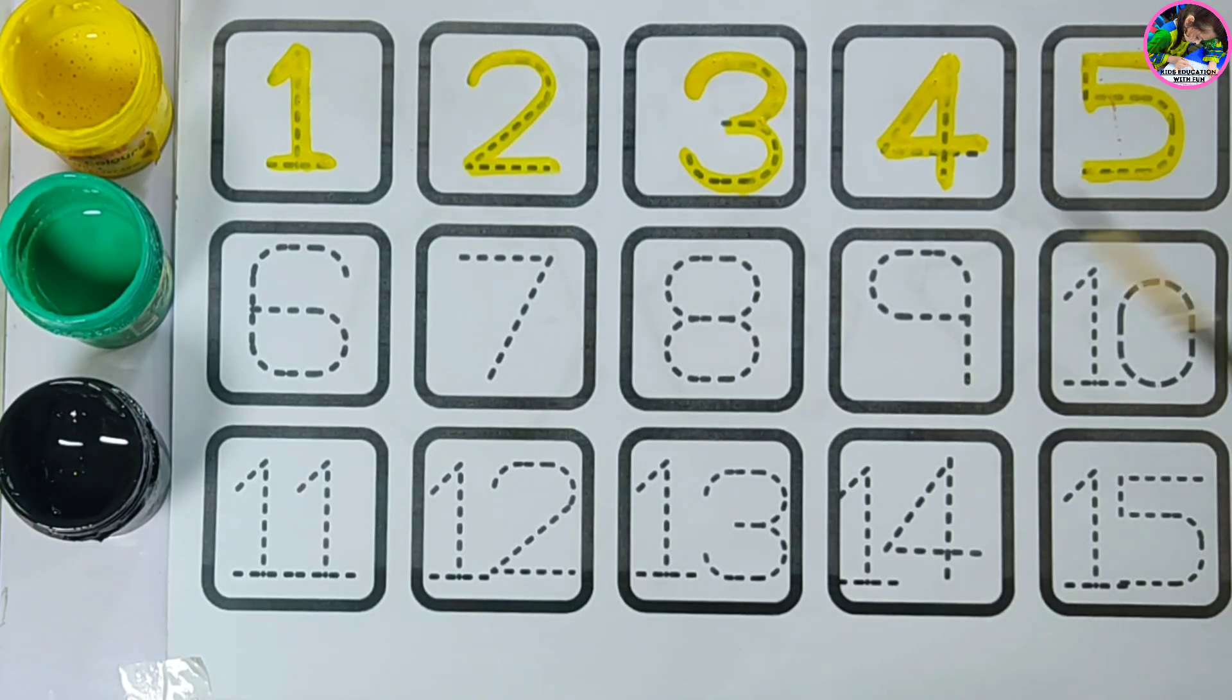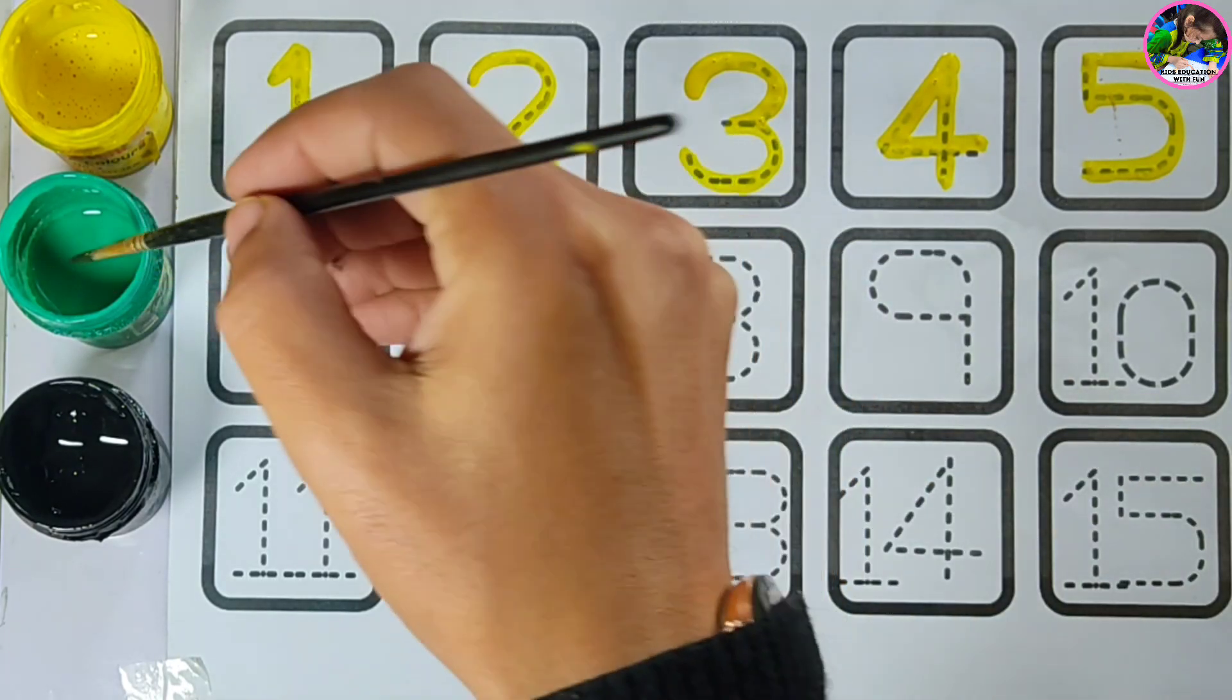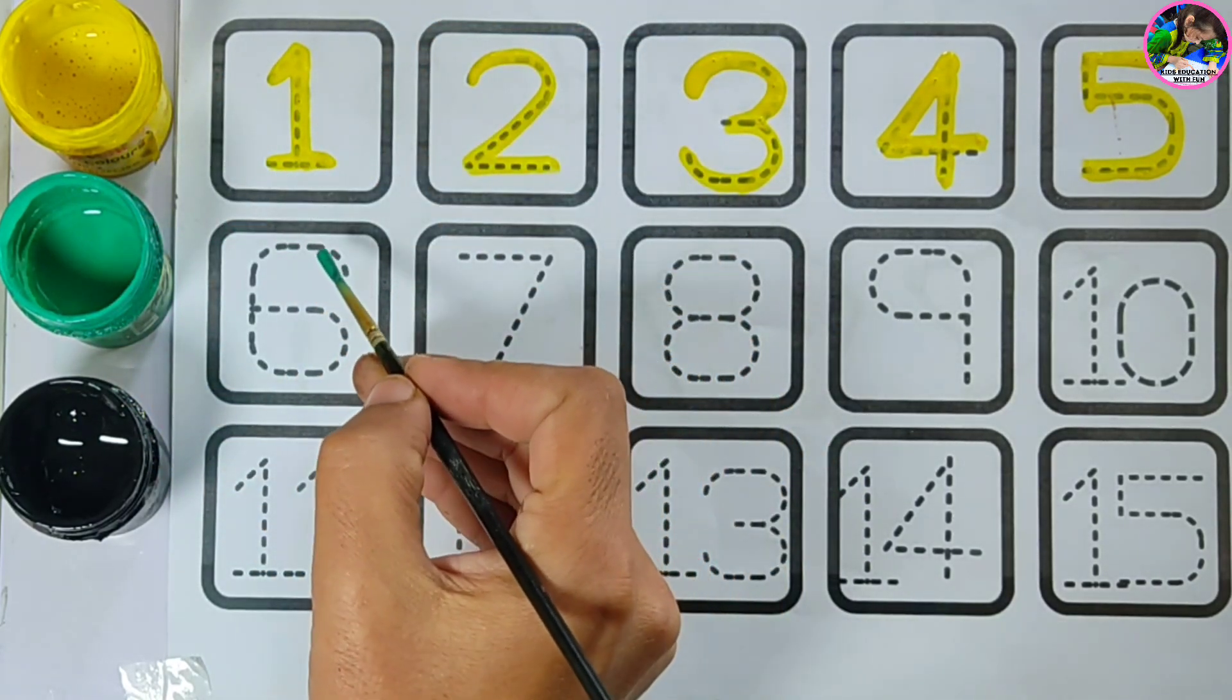Let's use another color. Which color is this? Dark green color. Number six.